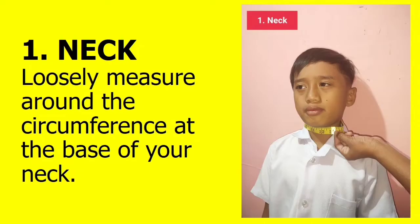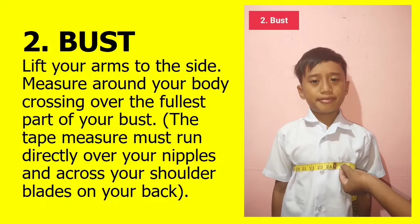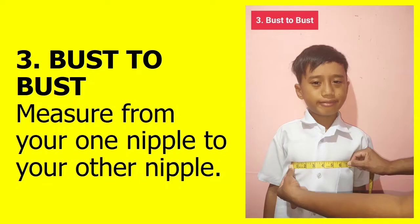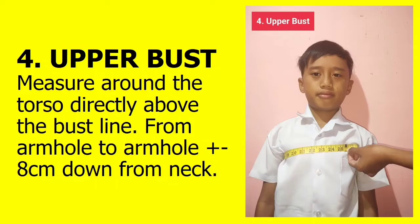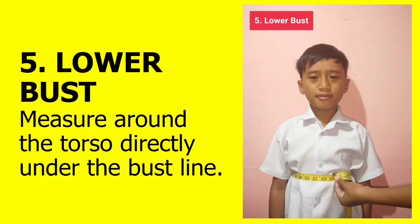I will show you the proper ways to measure the different body parts. One, neck: loosely measure around the circumference at the base of your neck. Two, bust: lift your arms to the side and measure around your body, crossing over the fullest part of your bust; the tape measure must run directly over your nipples and across your shoulder blades on your back. Three, bust to bust: measure from one nipple to the other. Four, upper bust: measure around the torso directly above the bust line, from armhole to armhole, 8 cm down from the neck. Five, lower bust: measure around the torso directly under the bust line.